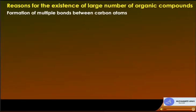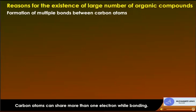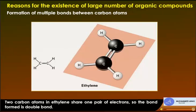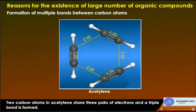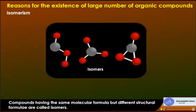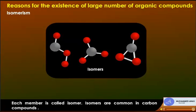Formation of multiple bonds between carbon atoms: carbon atoms can share more than one electron while bonding. Two carbon atoms in ethylene share one pair of electrons forming a double bond. Two carbon atoms in acetylene share three pairs of electrons forming a triple bond. Isomerism: compounds having the same molecular formula but different structural formulae are called isomers. Isomers are common in carbon compounds.